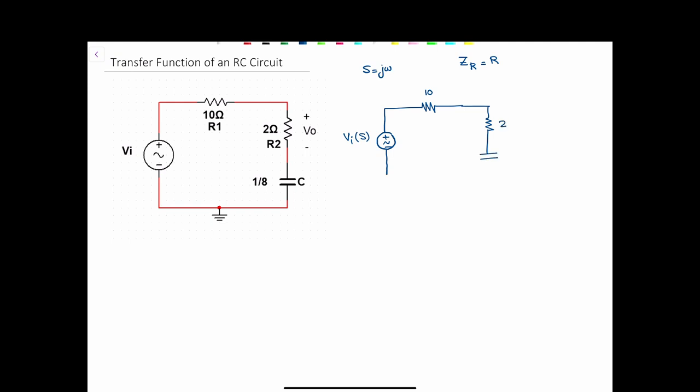But the capacitor's impedance is different than the capacitor's value. The capacitor's impedance depends on the frequency. So Z of C is equal to 1 over jωC or 1 over SC.